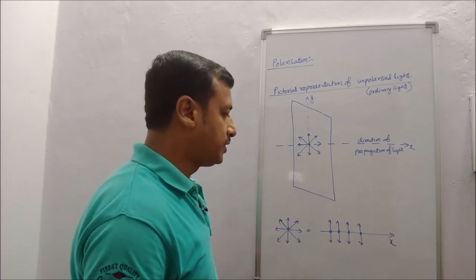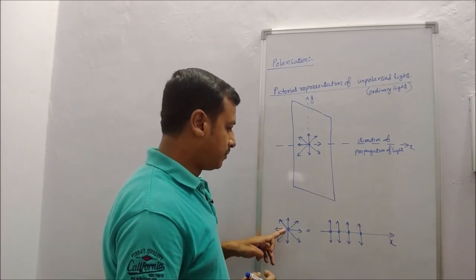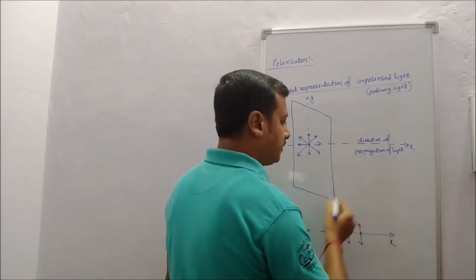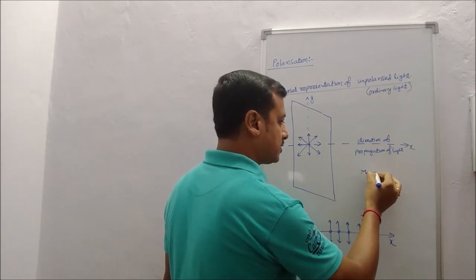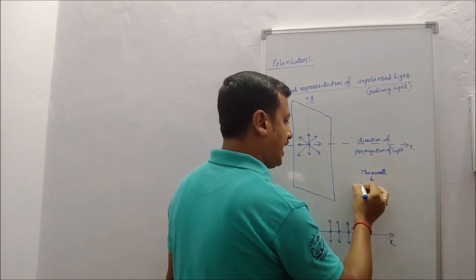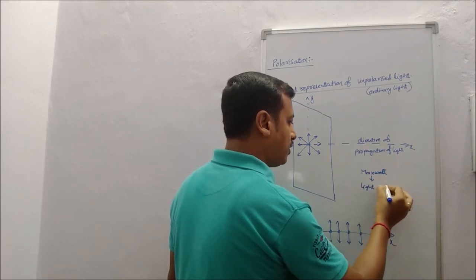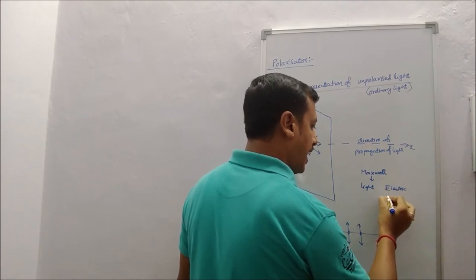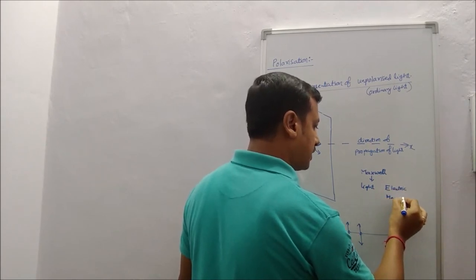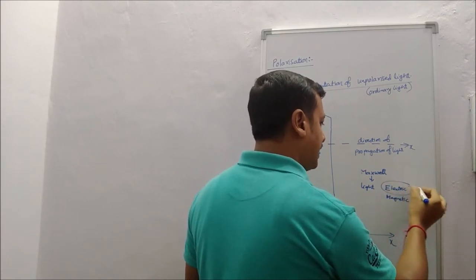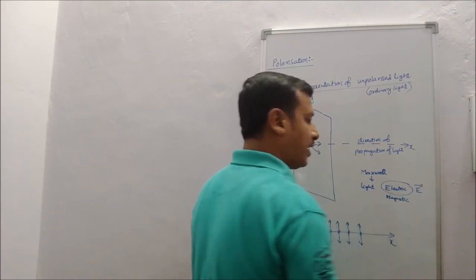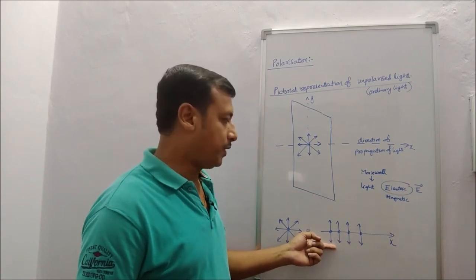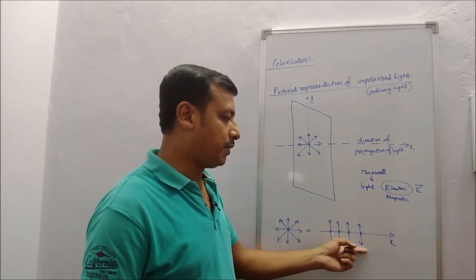Another representation shows that light oscillates in all directions. As Maxwell states, light has an electric vector component and a magnetic component, but in general we consider only the e-vector. The e-vector oscillates in a plane perpendicular to the direction of propagation. This is the representation of unpolarized light in the general case.